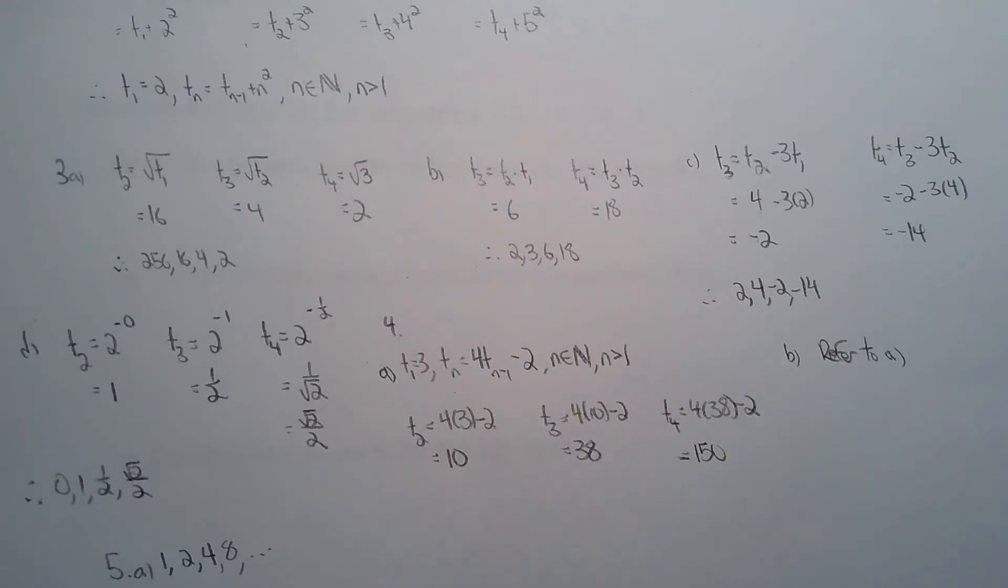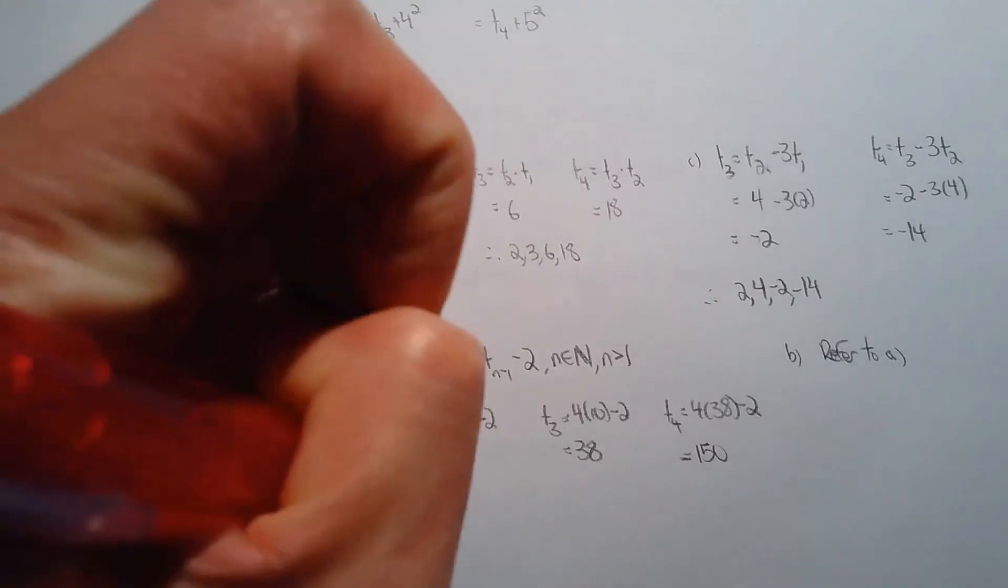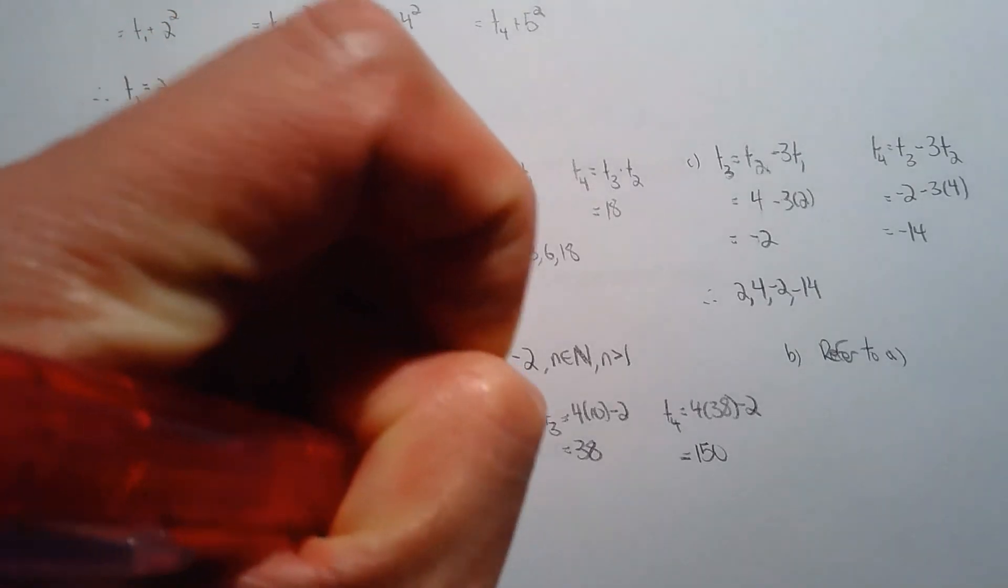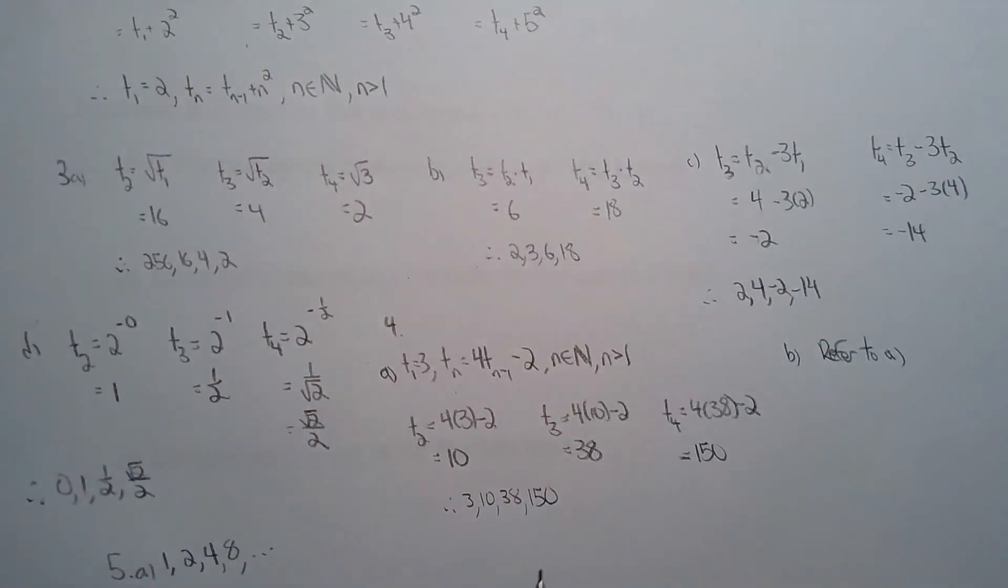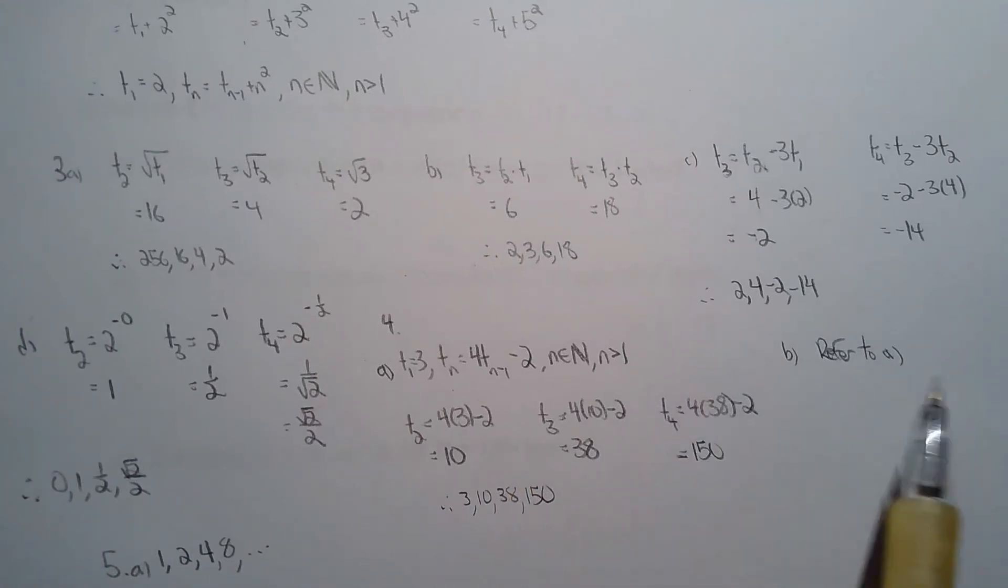So actually for 4a they actually just want the first four terms. So if that's the case, let's write the first four terms. So it's 3, 10, 38, 150. So those are your first four terms of this recursive sequence. And the formula, the recursive form, is what they wanted for part b but I gave it in part a anyways.